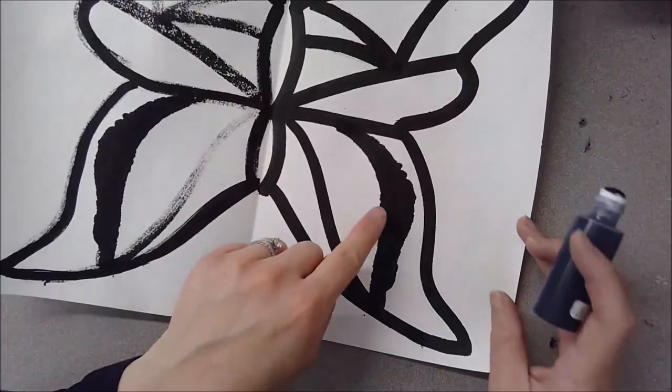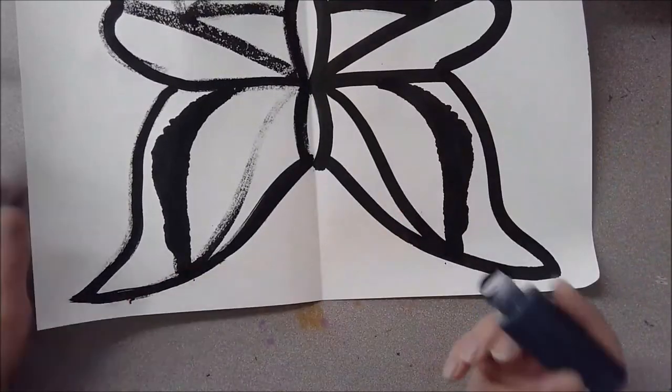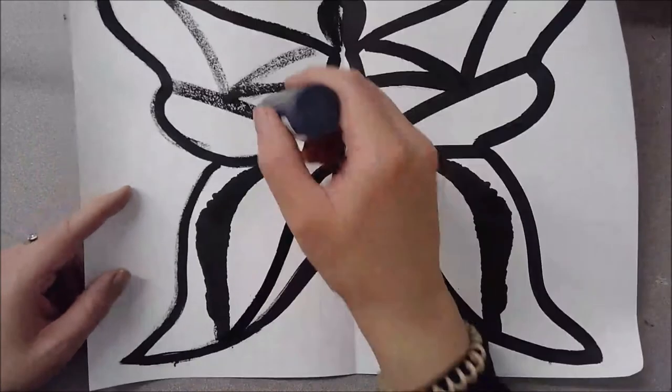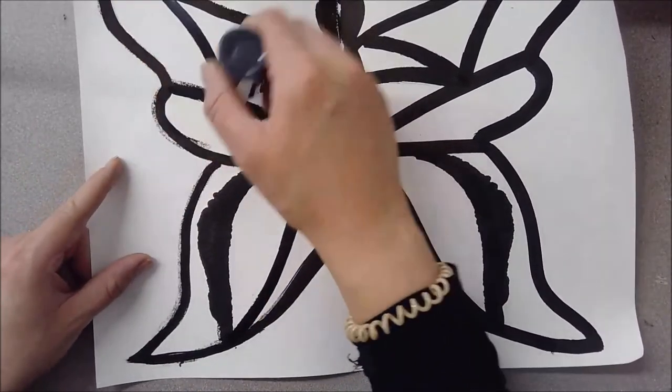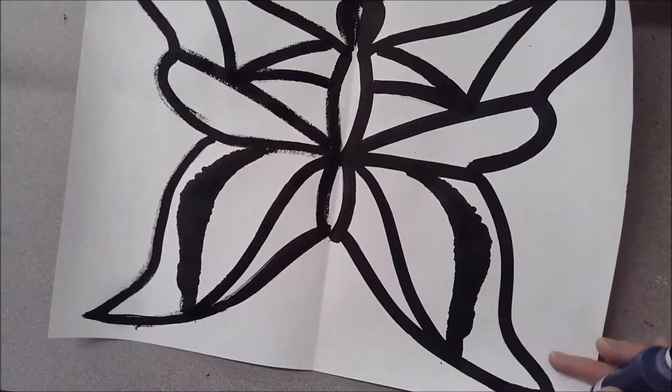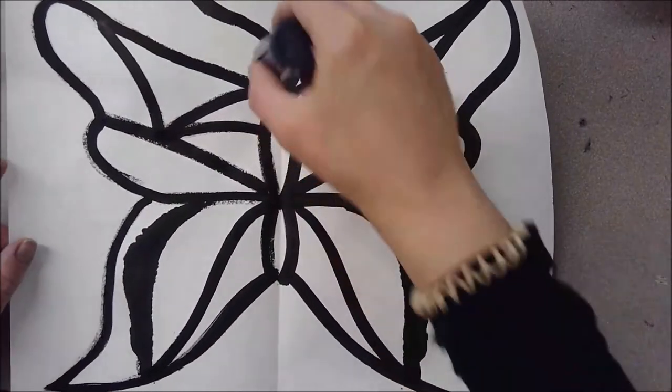That one spread out more than I thought it was going to. That's kind of cool though. That was an accident but I kind of like it. So sometimes accidents happen, things that we didn't anticipate cause our design to look a little bit different or change, but that's okay because it's kind of part of the nature of printmaking and I actually really like it that there's a thicker part there. I think it looks really cool.